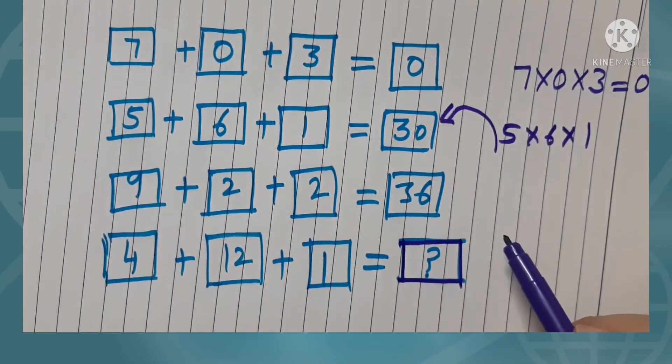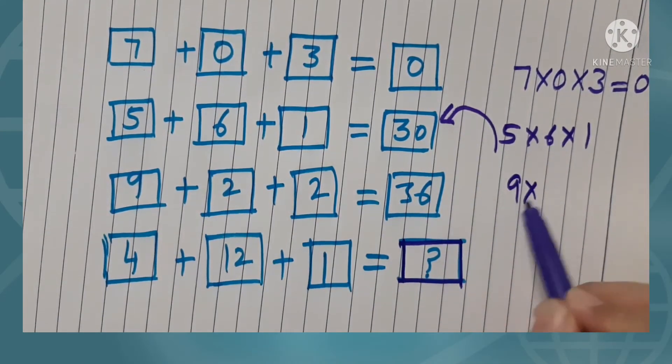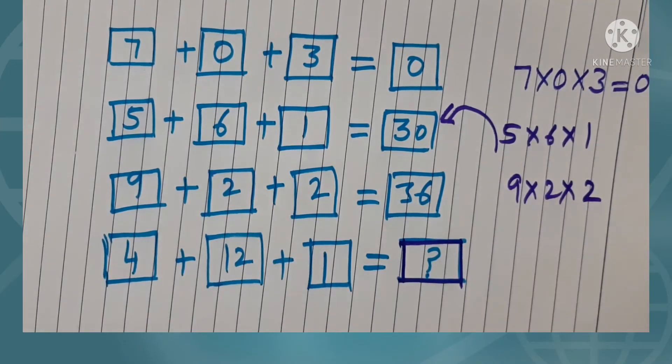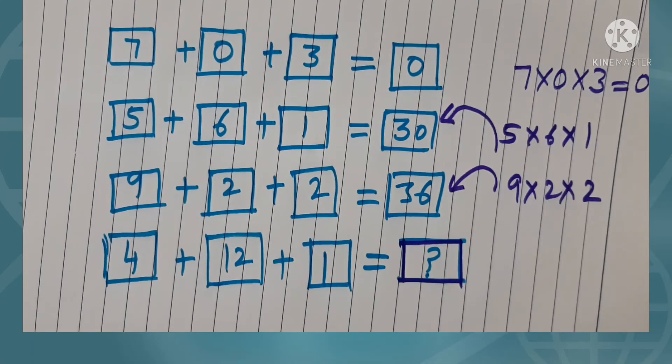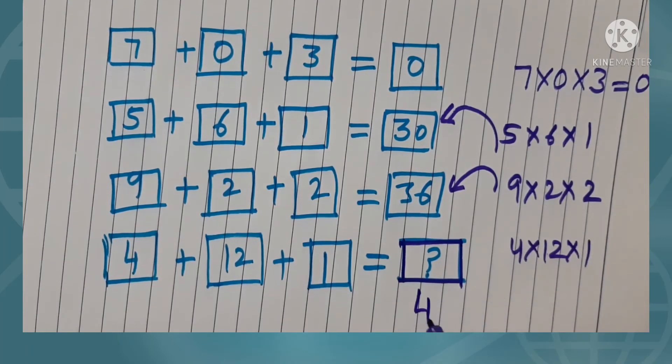Now 9 into 2 into 2, we get 36. So what will come in this box? Yes, you are right. 4 into 12 into 1, the correct answer is 48. Isn't it interesting?